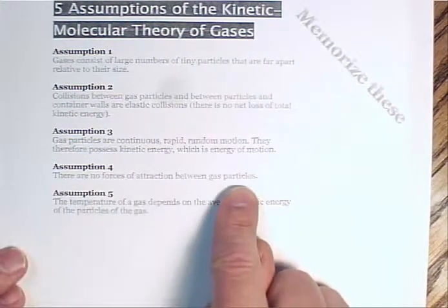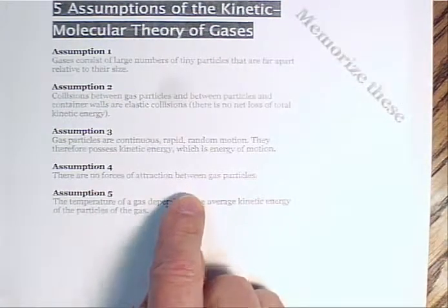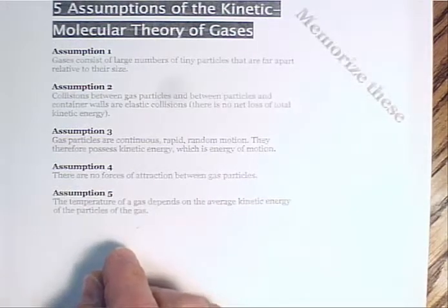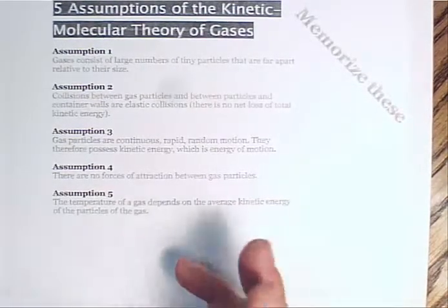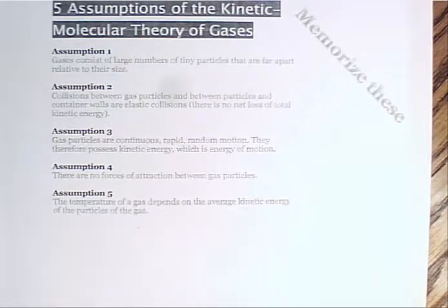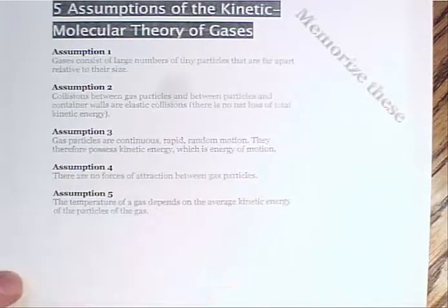There are no forces of attraction between gas particles. That's assumption four. Well, we know there are forces of attraction, but the speed at which gas molecules move around is so great that the attraction is kind of overcome. You know, they hit really hard and bounce right off. It's like if I were to take a tennis ball and throw it to a surface that has Velcro on it. If I throw it hard enough, it won't stick. But if I throw it slow enough, it will stick to the Velcro.